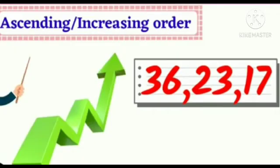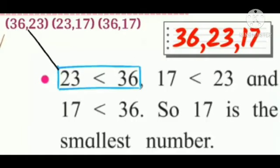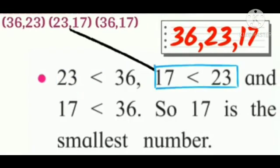Let's see how to put the numbers 36, 23, and 17 in ascending or increasing order. First, let's compare the numbers. 36 and 23 — 23 is less than 36. Second, 23 and 17 — 17 is less than 23.